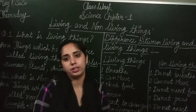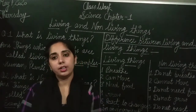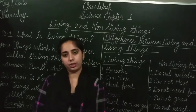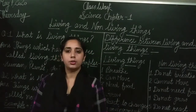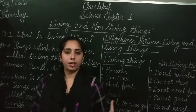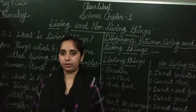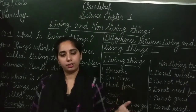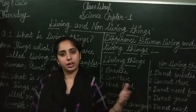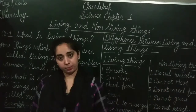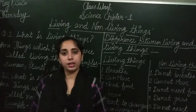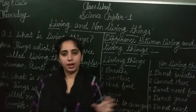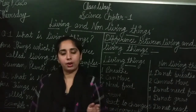Reproduction. Living things can reproduce. The generations of living things keep growing — like grandfather to father, father to you, family to family. In the same way, non-living things cannot reproduce; they have no such quality.